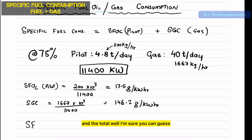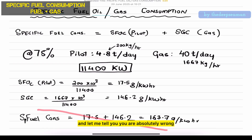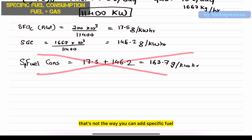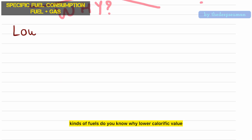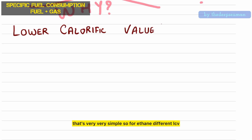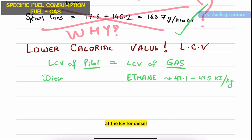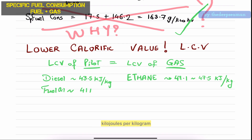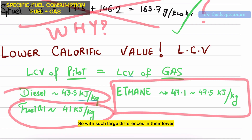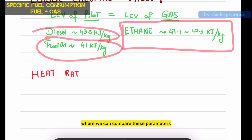For the total, you might think it's straightforward — just add the pilot and the gas — but you would be absolutely wrong. That's not the way you can add specific fuel consumption, especially for two different kinds of fuels. The reason? Lower calorific value. For ethane, a different LCV, and for fuel or diesel, a different LCV. The LCV for ethane is about 47.1 to 47.5 kilojoules per kilogram, whereas the LCV for diesel is about 43.5 and for fuel oil about 40 to 41 kilojoules per kilogram. With such large differences in lower calorific value, we can't use the same figures — we need a common ground to compare these parameters.